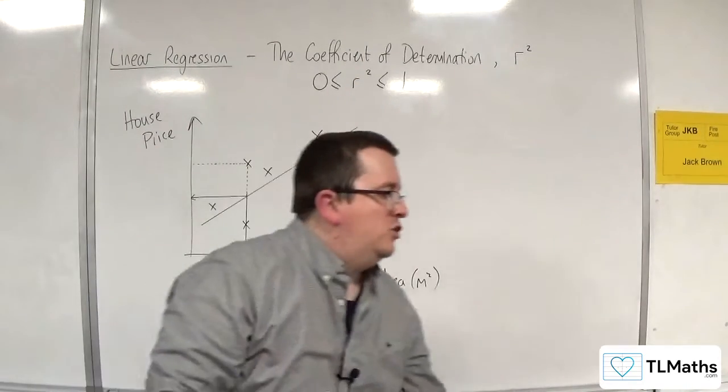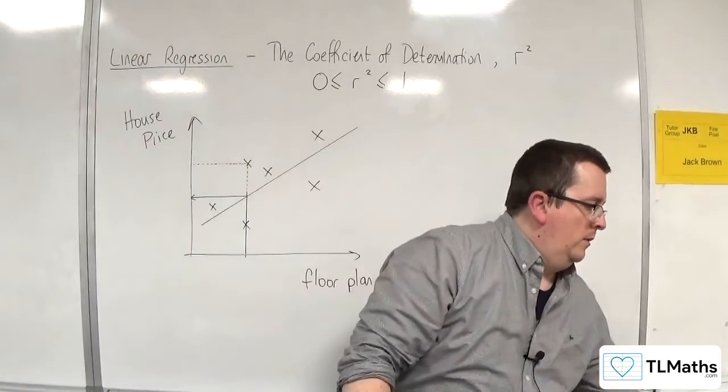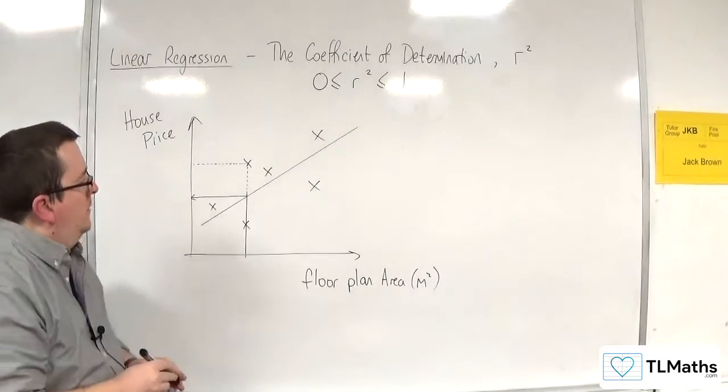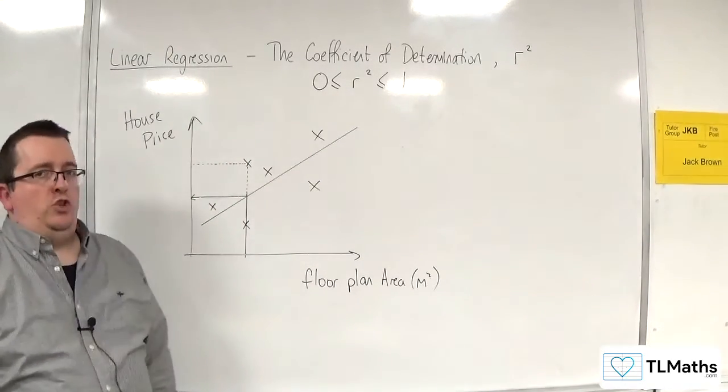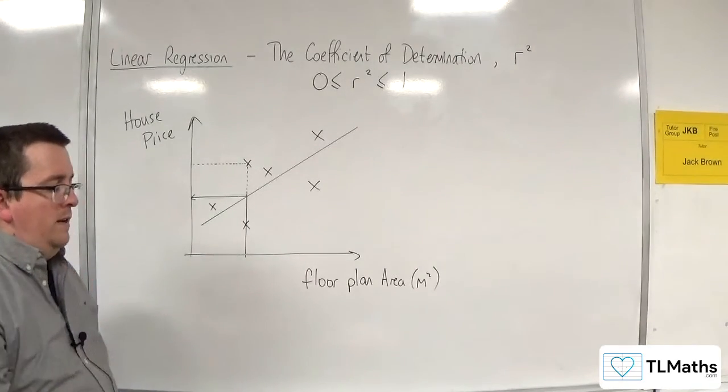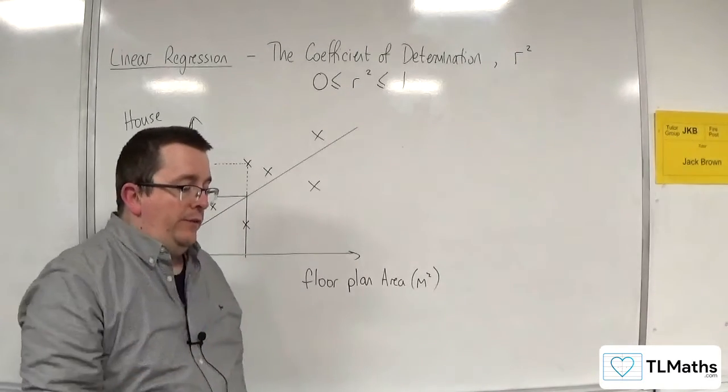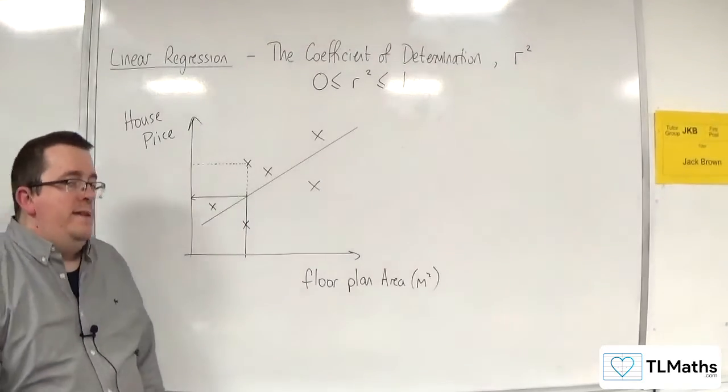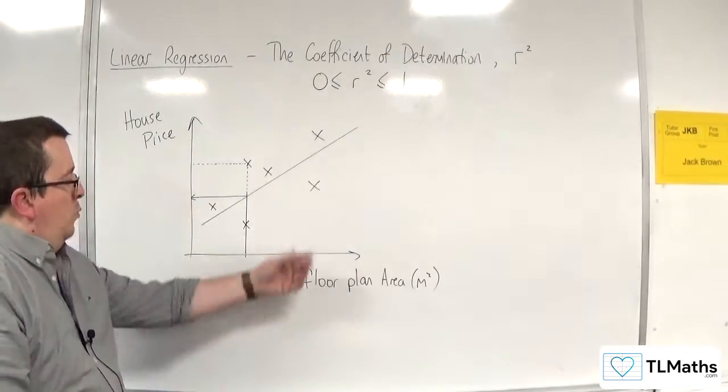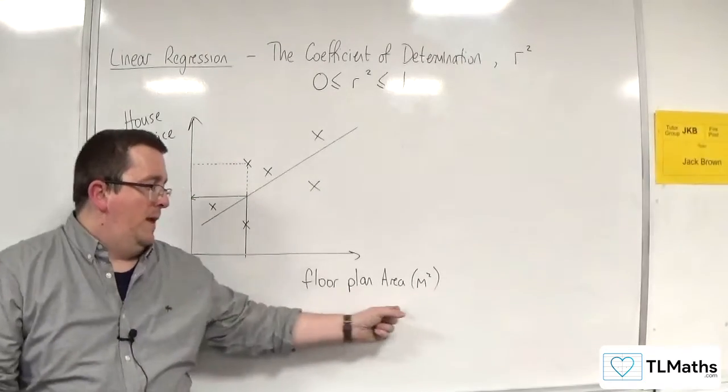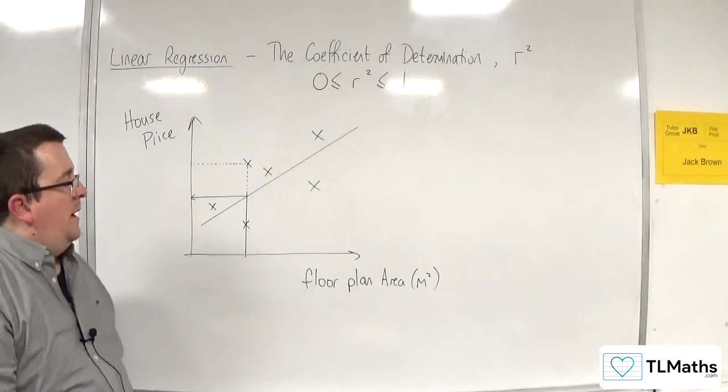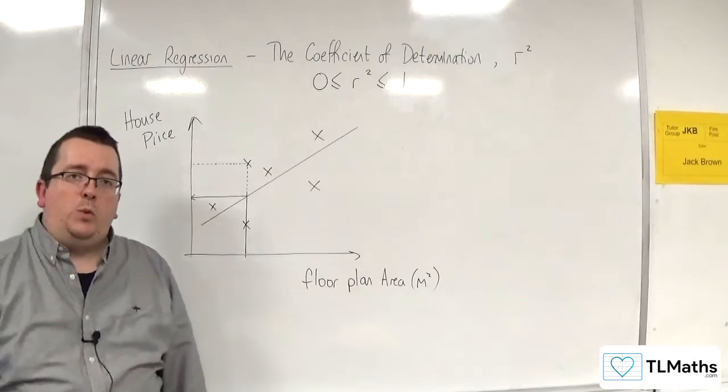Now what is that discrepancy? Where is that coming from? Let's think about this contextually. When people buy houses or sell houses, a number of factors are considered. One factor is probably the size of the house, the floor plan area. But other things might be taken into account.